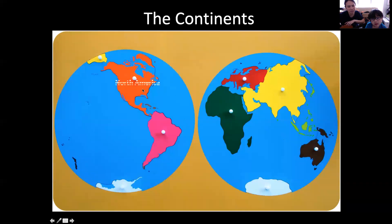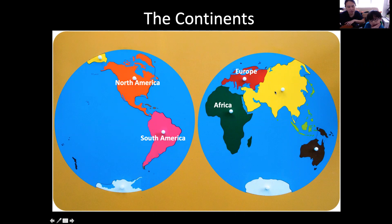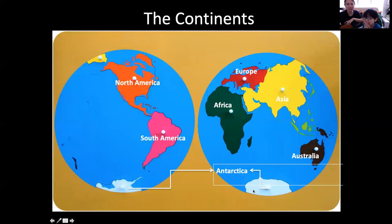The orange one is North America. The pink one is South America. The green one is Africa. Yellow is the largest continent and it is called Asia. The smallest continent is Australia and it's brown. And the white one is Antarctica.